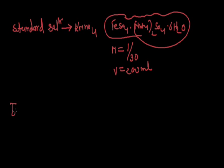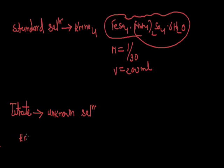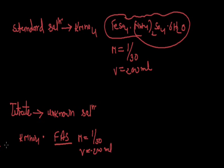The next term is titrate. The solution containing the substance to be estimated is termed the unknown solution or titrate. Simply, titrate means unknown solution. For example, taking KMnO4 and ferrous ammonium sulfate (FAS), if the molarity of FAS is 1/30 and volume is 200 ml, and our aim is to find out the molarity of KMnO4, then KMnO4 is the titrate, or the KMnO4 solution is called the unknown solution.